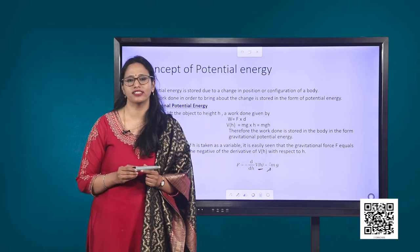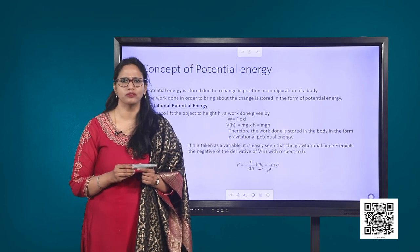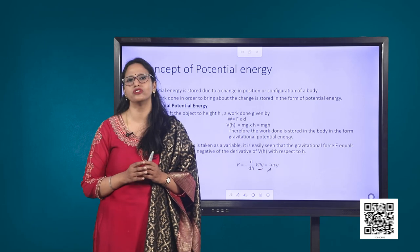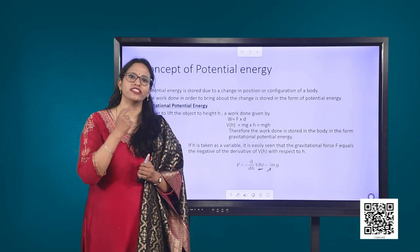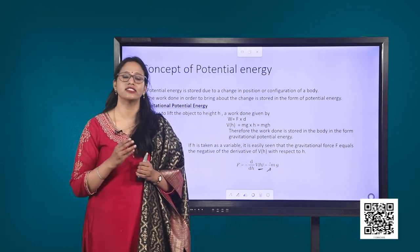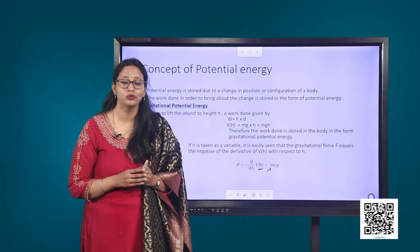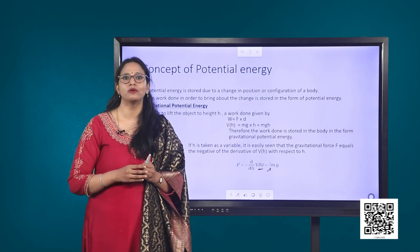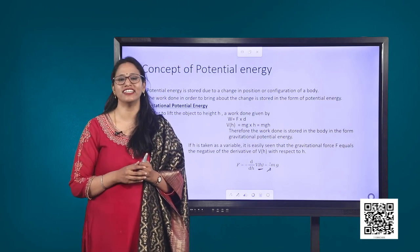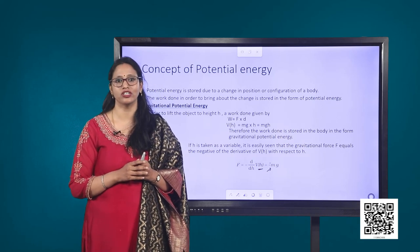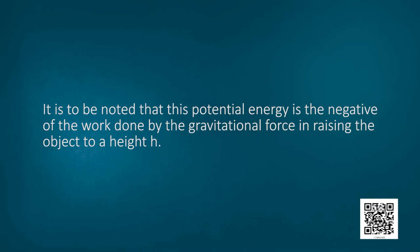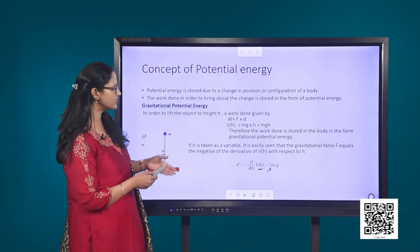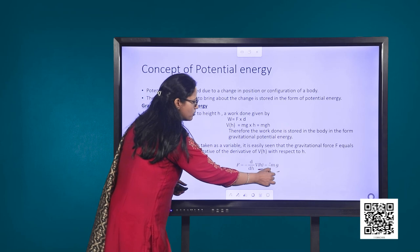It is worth noting that mgh represents the change in the gravitational potential energy and not the absolute value. For example, consider an object on a table with potential energy of 500 joules. If it is raised to a height h and the potential energy becomes 650 joules, the work done is 150 joules — that is 650 minus 500 — which equals mgh. So mgh basically represents the change in gravitational potential energy.